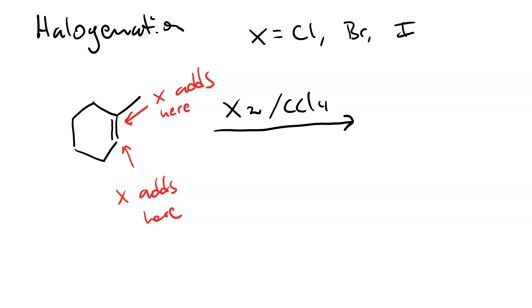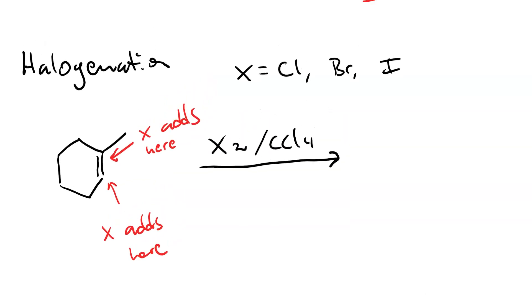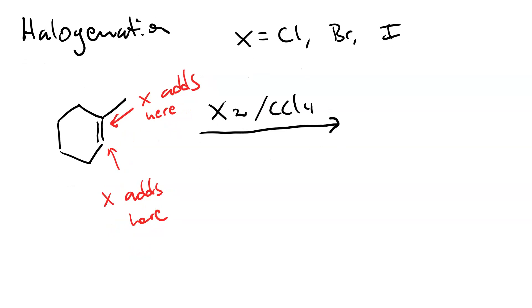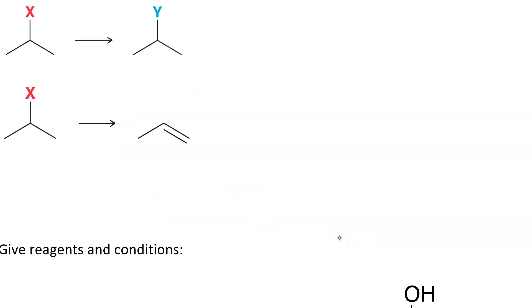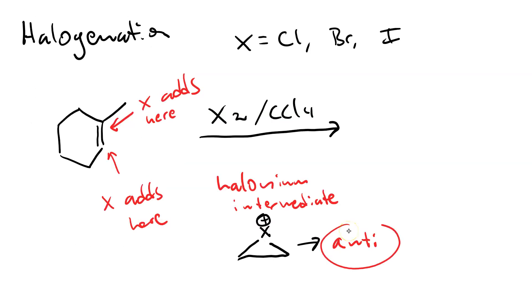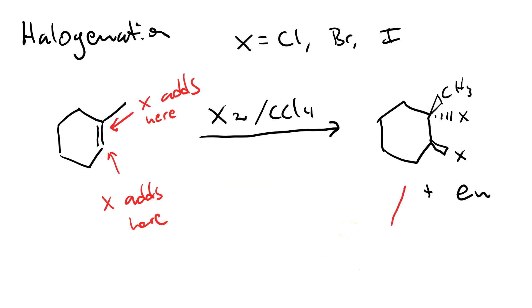This goes through the halonium intermediate, which is a cationic three-membered ring, which means that it will always be anti. So you get this, and its enantiomer, the anti-addition products.